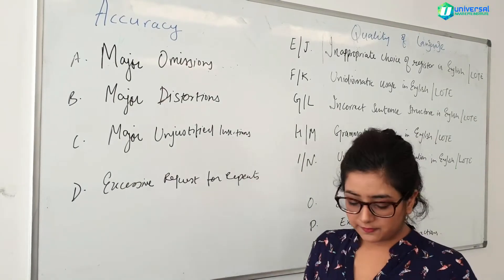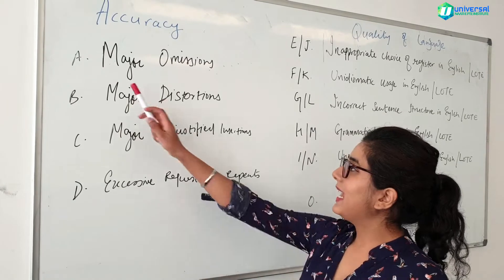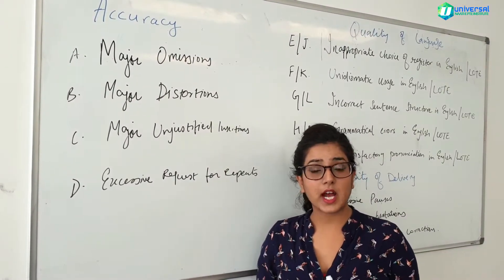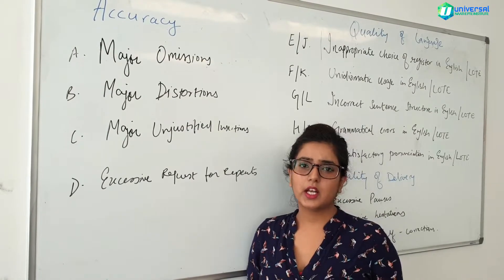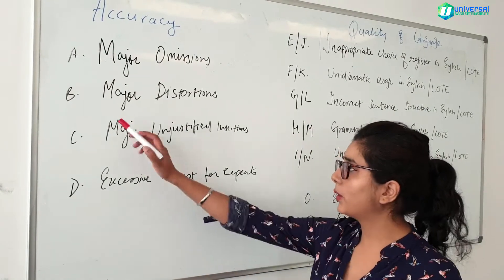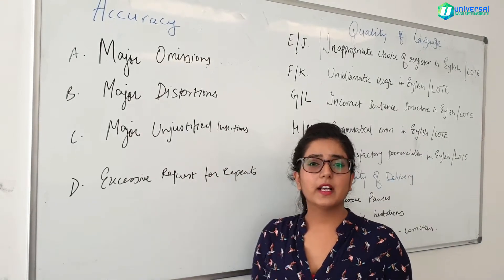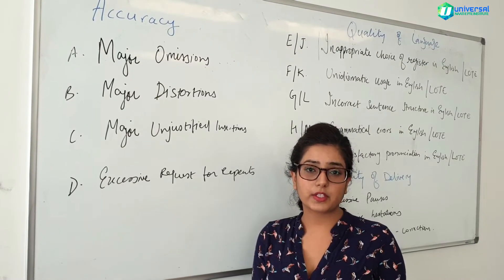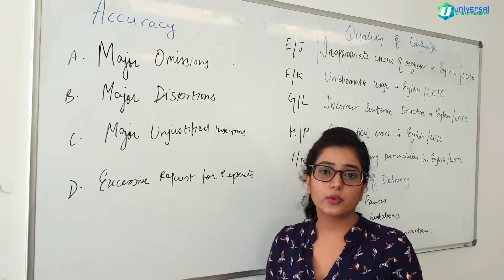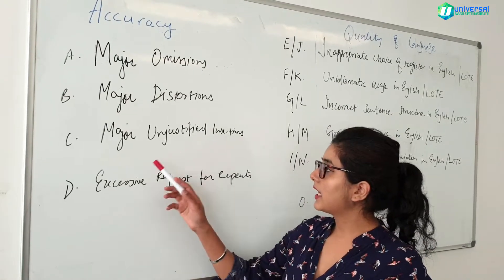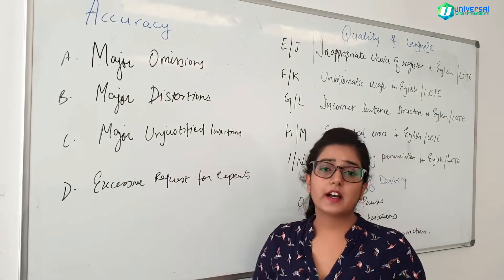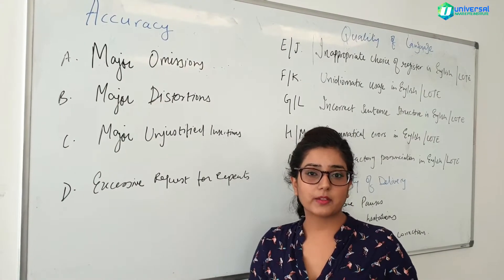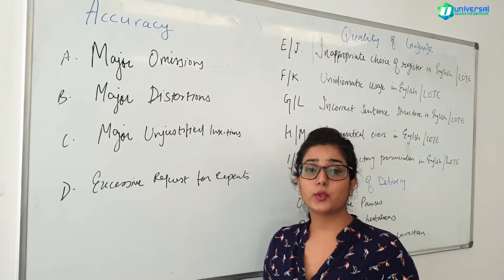We'll take a look at the accuracy side first. Code A is major omissions, which basically means that you have missed some information out of the segment — you have not delivered the full message. Code B is major distortions, which means you have misinterpreted the information and not delivered the message in its correct form. Code C is major unjustified insertions, which means you have added information from your own mind that was not in the segment. You will lose marks for this.